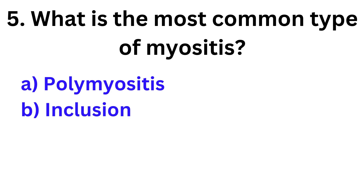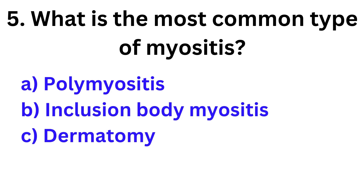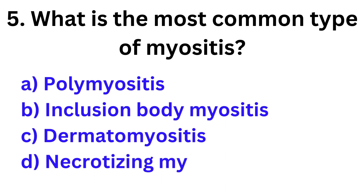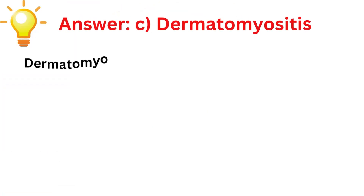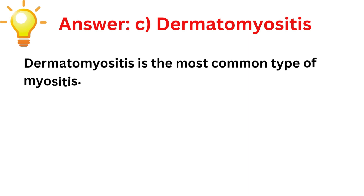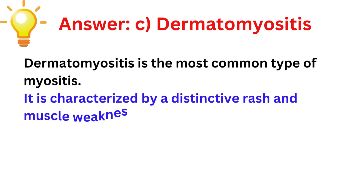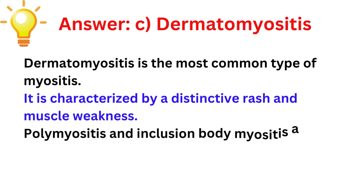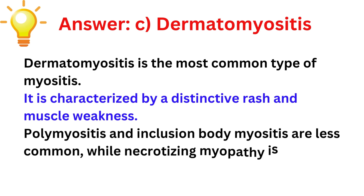Today's final question: What is the most common type of myositis? Options: polymyositis, inclusion body myositis, dermatomyositis, necrotizing myopathy. Correct answer is dermatomyositis. Dermatomyositis is the most common type of myositis, characterized by a distinctive rash and muscle weakness. The four types of myositis are: dermatomyositis (most common), polymyositis (second), inclusion body myositis (third), and necrotizing myopathy (fourth, a rare type).